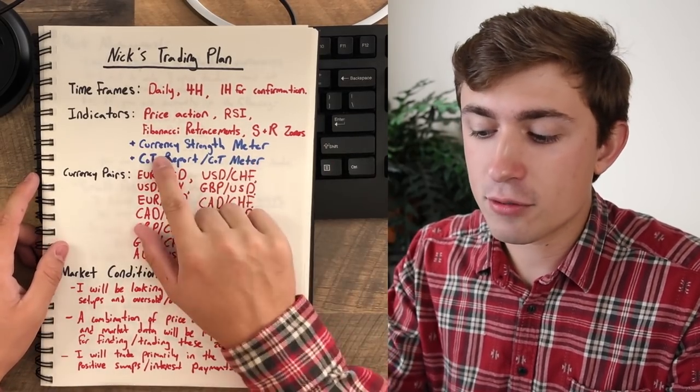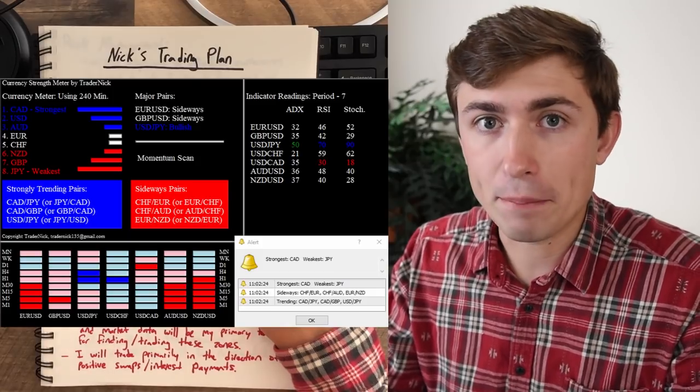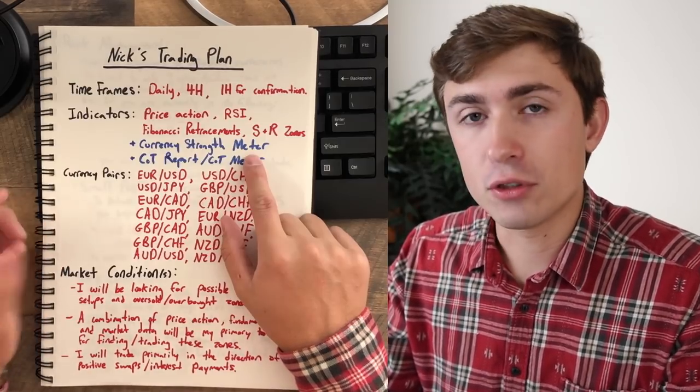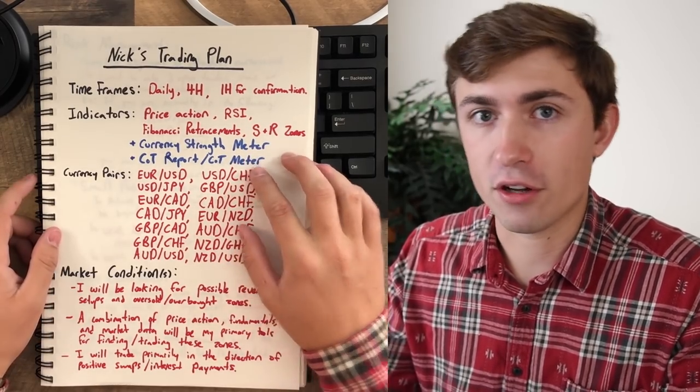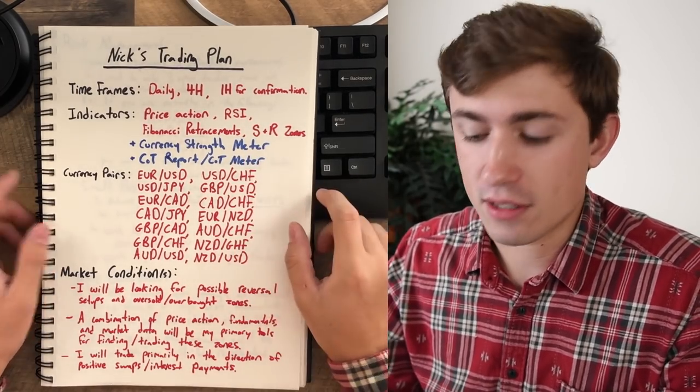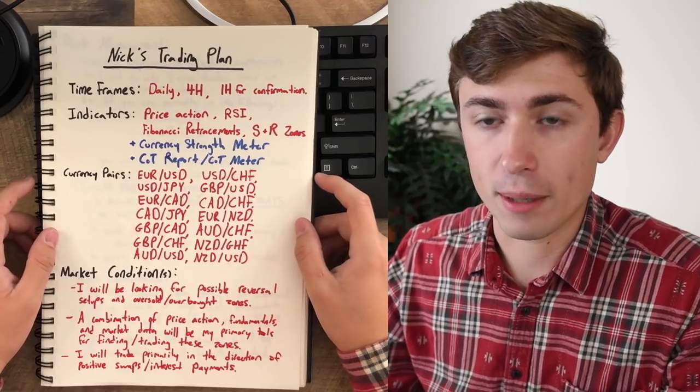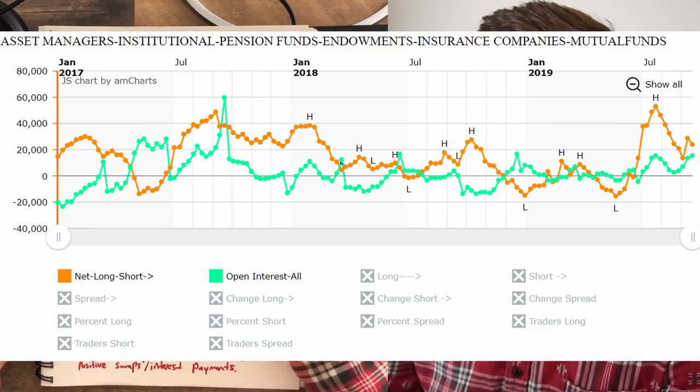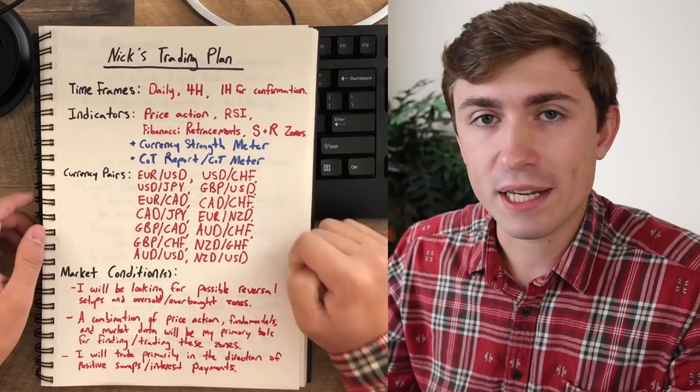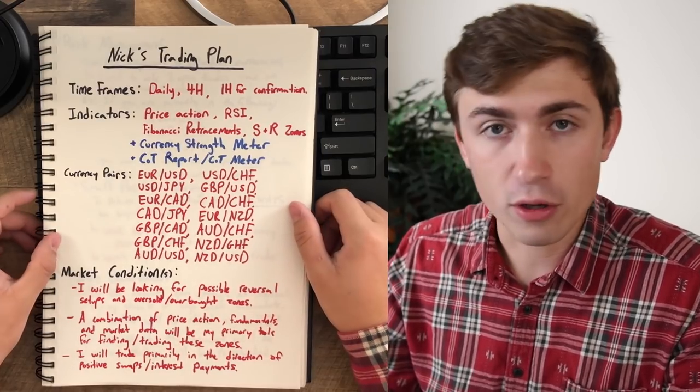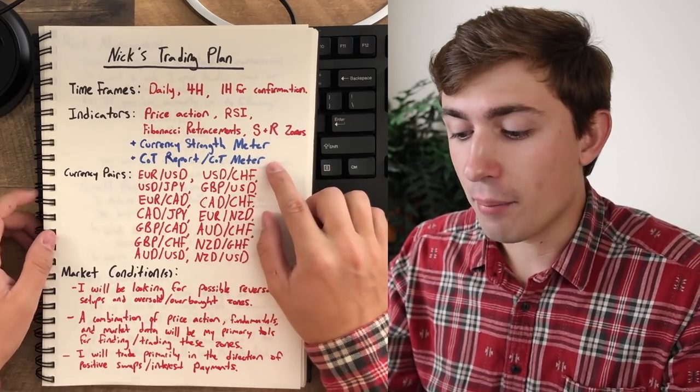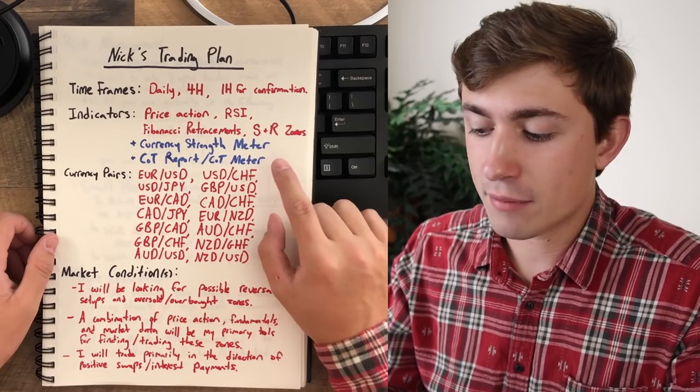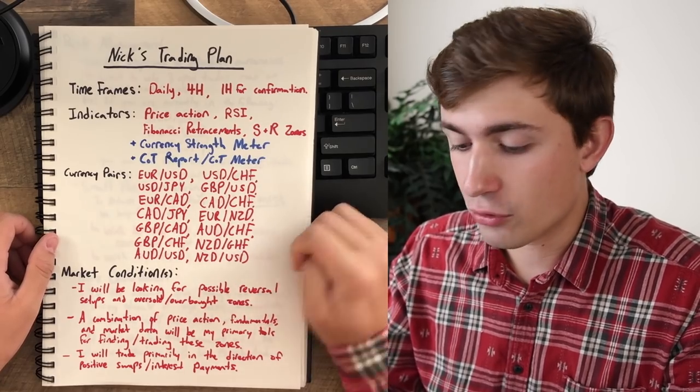On top of those things, I also use the currency strike meter, which is a tool that I built personally. I'm a software developer by kind of trade and I build tools for myself as well as other traders. You can find more information on that in the description down below. There's kind of a link to the website where I share some of my tools. They are for sale there. The other one is the commitment of traders report or the COT meter, as I like to call it, which gives us a little bit of insight on what institutional money is doing. And this is a tool that we also have been building behind the scenes.